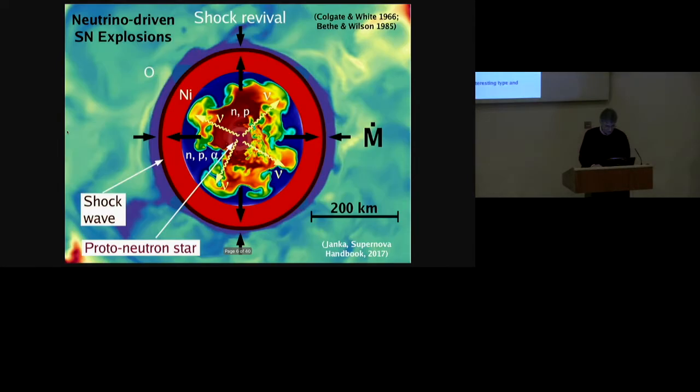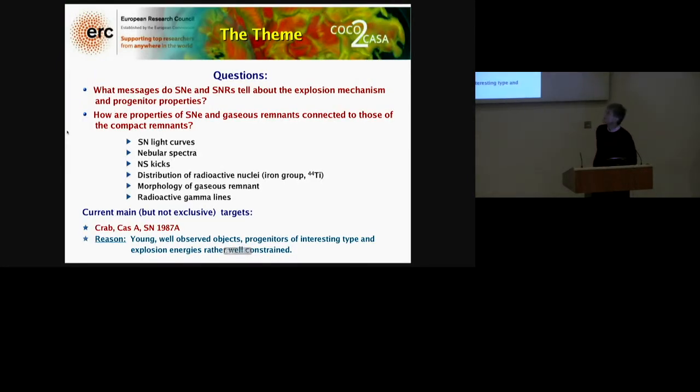We are doing this in steps now. We have started recently connecting self-consistent three-dimensional explosions. Some of these models started out with three-dimensional morphologies in the progenitors already. And then we continue into the late stages in order to answer questions like these. What are the messages which supernovae and supernova remnants can tell us about the explosion mechanism and the progenitor properties? How are these properties of the supernovae and the gaseous remnants connected to those of the compact objects in the centers?